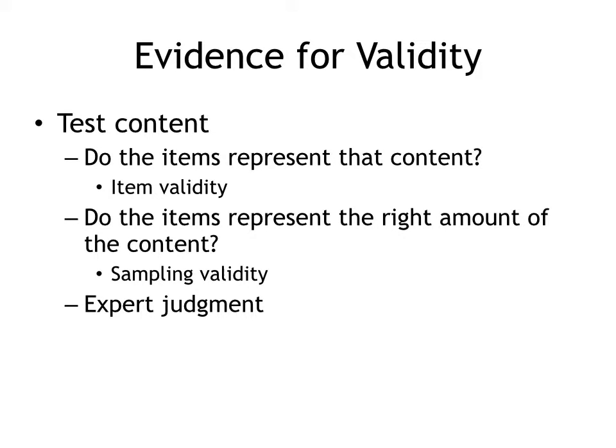Now I'm going to talk about the evidence you can look for when judging the validity of measurements. The first is test content. Ask yourself two questions: Do the items represent that content? And do the items represent the right amount of that content? For example, if you're giving a test for American history between 1700 and 1900, and you put questions about the Civil War, those scores are valid for measuring content knowledge of those 200 years. But if you toss in questions about the penal colonies in Australia, using those questions to measure American history knowledge is not valid. This is what we call item validity.